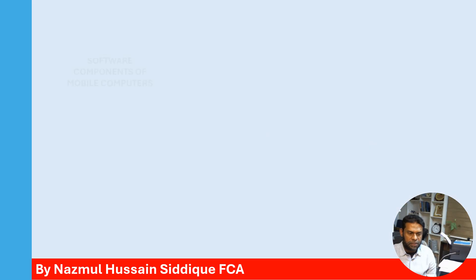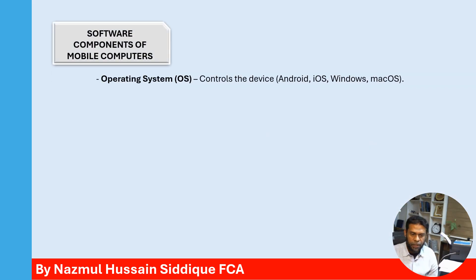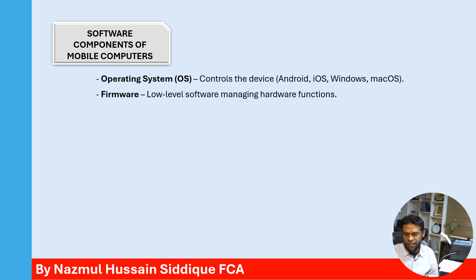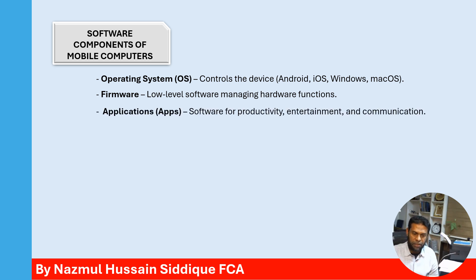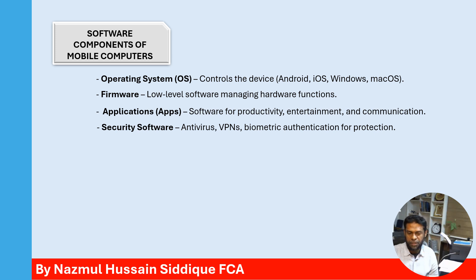The software components of mobile computers. Operating system — controls the device; Android, iOS, Windows and macOS are typical operating systems for mobile computers. Firmware — low-level software managing hardware functions. Applications — software for productivity, entertainment and communication. Security software — antivirus, VPNs and biometric authentication for protection.